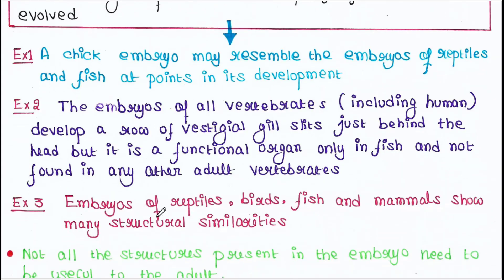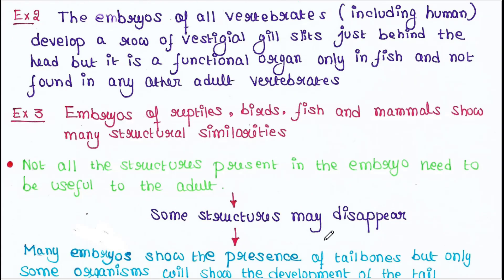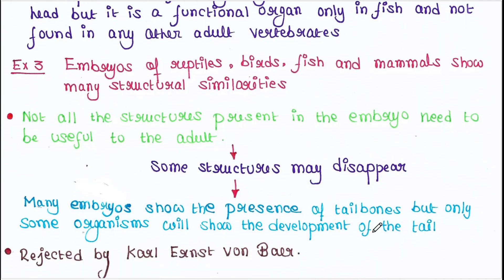When embryos of reptiles, birds, fish, and mammals are observed, it can be seen that they show many structural similarities. Not all the structures present in the embryo need to be useful to the adult — some structures may disappear in the process of evolution. Many embryos show the presence of tail bones, but only some organisms will show the development of the tail.